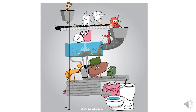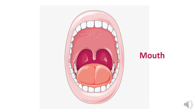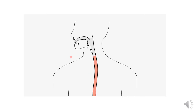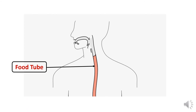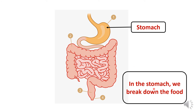Let's see these organs one by one. First of all, we start eating using our mouth, our teeth, and our tongue. When the food enters the mouth, it then goes into this tube — we call it the food tube. This food tube delivers the food into the stomach. What happens in the stomach? In the stomach, we break down the food.